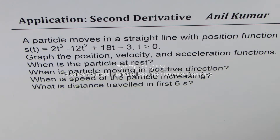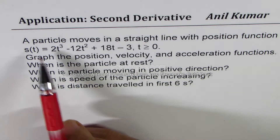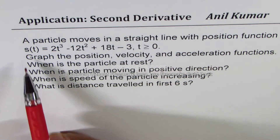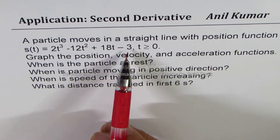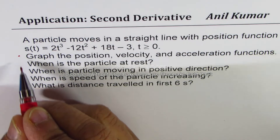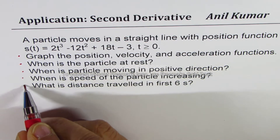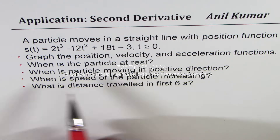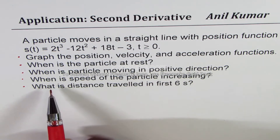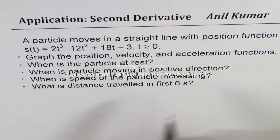I'm Anil Kumar sharing with you a practice test question on application of the second derivative. A particle moves in a straight line with position function s(t) = 2t³ − 12t² + 18t − 3, where t ≥ 0. You have to: graph the position, velocity, and acceleration functions; find when the particle is at rest; when it is moving in the positive direction; when speed is increasing; and the distance traveled in the first six seconds. You can pause the video, answer the questions, and then check my suggestions.